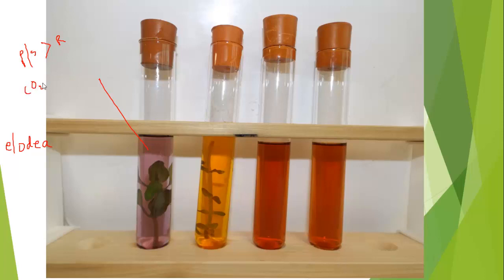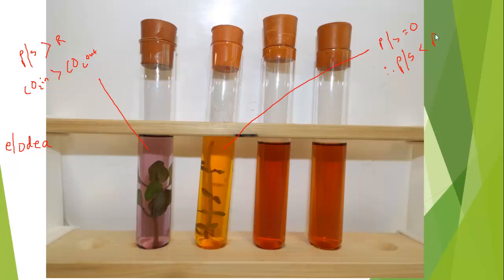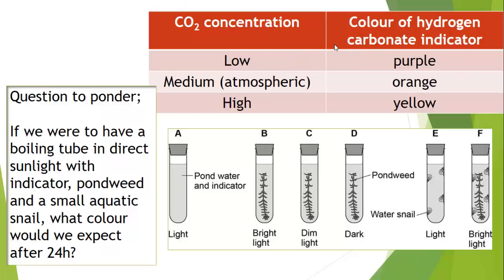Photosynthesis has been going on at a greater rate than respiration, so CO₂ taken in by the Elodea is greater than CO₂ released, meaning the solution has a lower concentration of CO₂ — hence purple. However, in the dark sample, photosynthesis equals zero, so the rate of respiration exceeds CO₂ uptake. The plant is giving out CO₂ overall, so the CO₂ concentration rises — hence yellow. In the light sample, CO₂ enters the plant and is taken up.